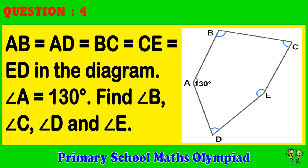Question 4: AB is equal to AD, BC, CE, and ED in the diagram. Angle A is 130 degrees. Find angle B, angle C, angle D, and angle E.